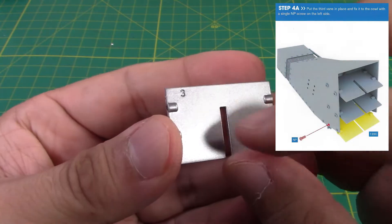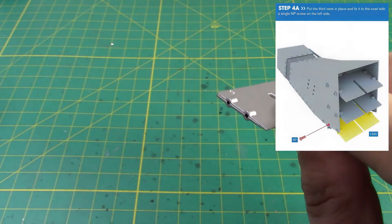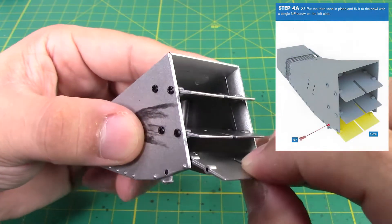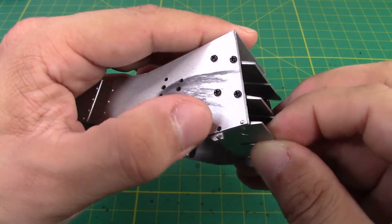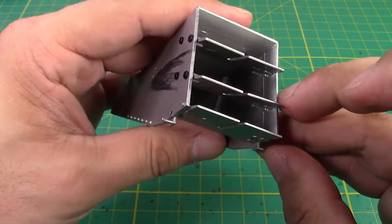And lastly we're going to take our third vane number three and that's going to go right in the bottom here. And this one's only going to have one NP screw on each side.